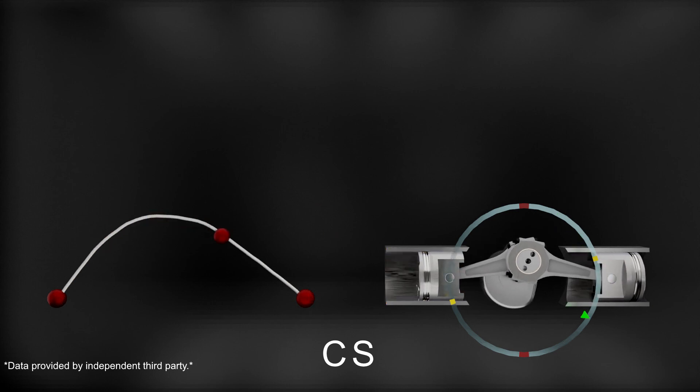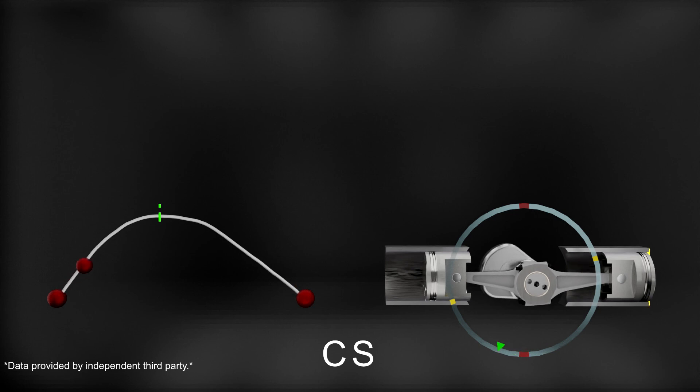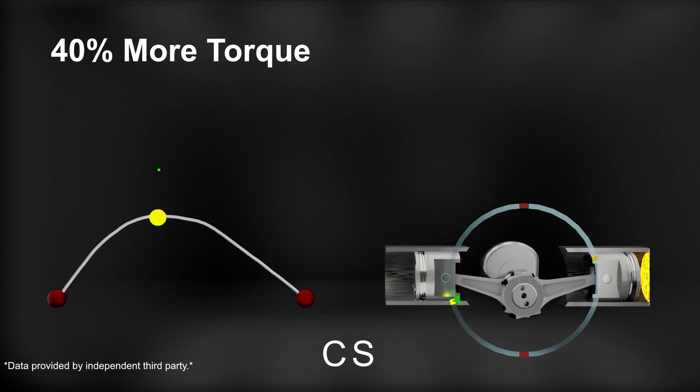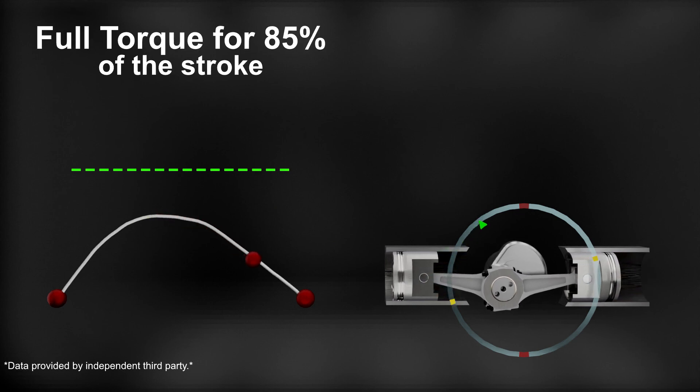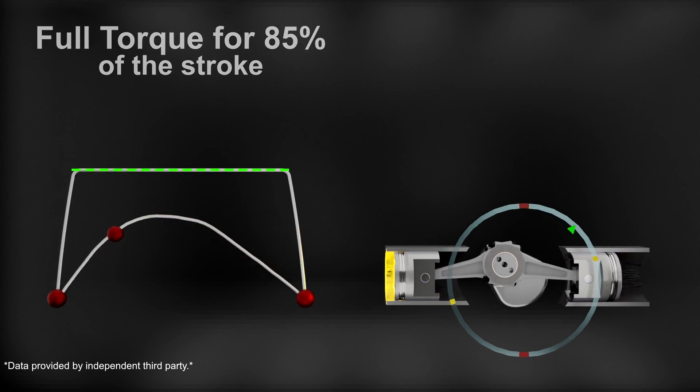Now, imagine if you were able to increase the same leverage by 40% and then extend the amount of time that the full torque is available from just a miniscule moment to 85% of the stroke. This is what the CV design achieves for the internal combustion engine.